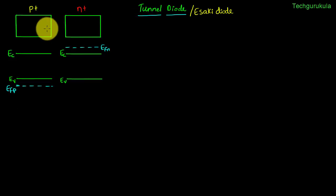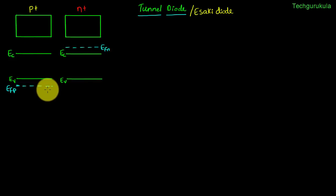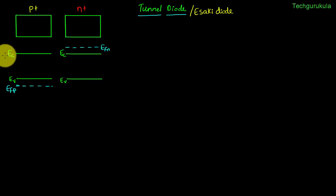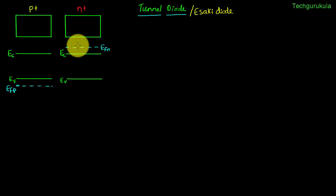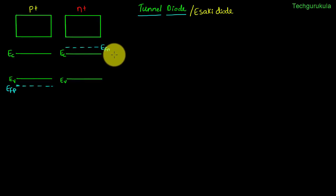Hypothetically, if we join these two materials to make a tunnel diode, there are a lot of electrons on the n-side which would move to the p-side, and a lot of holes on the p-side which would move to the n-side. As a result, the electron energy of the p-side material would increase and the electron energy on the n-side material would decrease. When the tunnel diode reaches equilibrium, the Fermi energy level would be constant throughout the PN junction diode because there won't be any net current flowing.